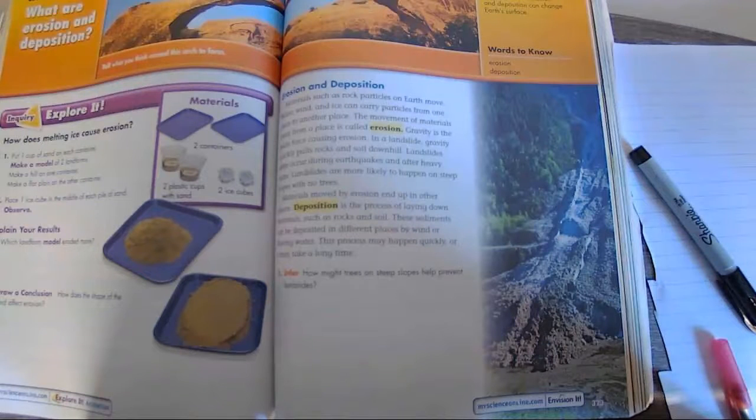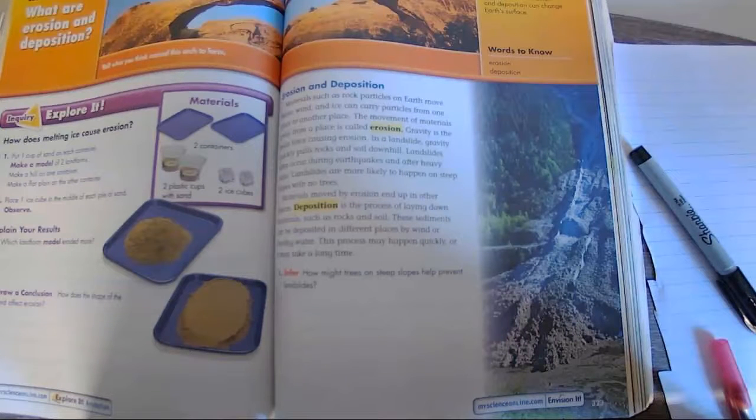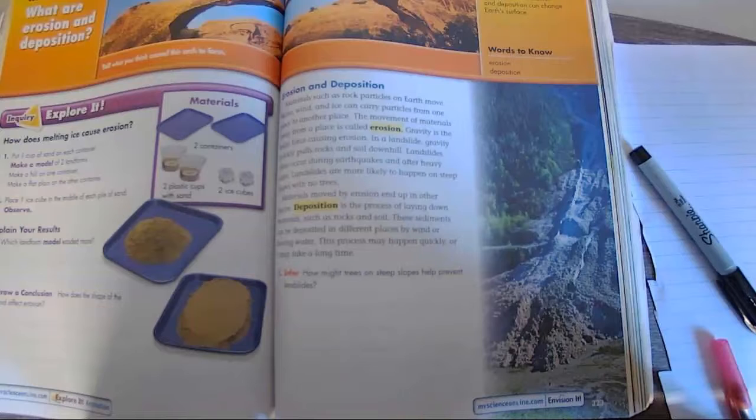Materials moved by erosion end up in other places. Deposition is the process of laying down materials such as rocks and soil. These sediments can be deposited in different places by wind or flowing water. This process may happen quickly or it may take a long time.